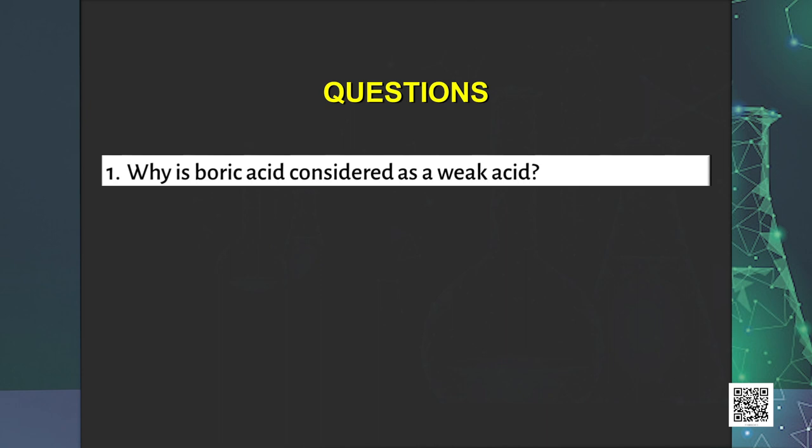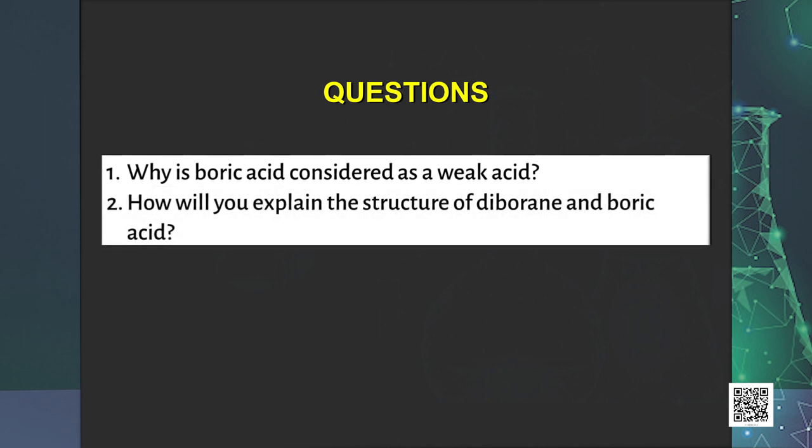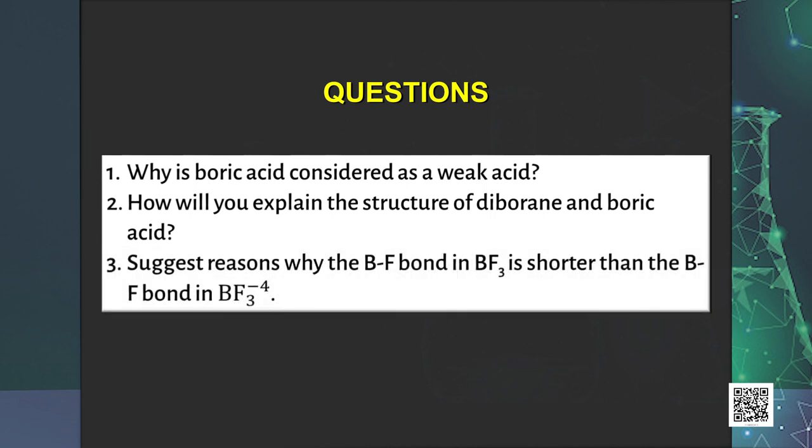Here are some interesting questions to consider: Question 1 — Why is boric acid considered a weak acid? Question 2 — How will you explain the structure of diborane and boric acid? Question 3 — Suggest reasons why the B–F bond in BF₃ is shorter than the B–F bond in the BF₄⁻ ion. That is all for this discussion; we will continue to learn more about P-Block elements in other episodes. Thank you.